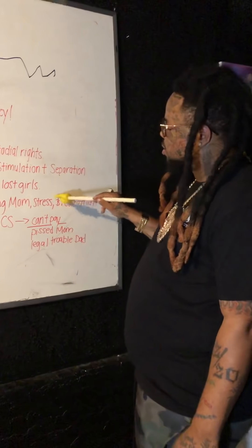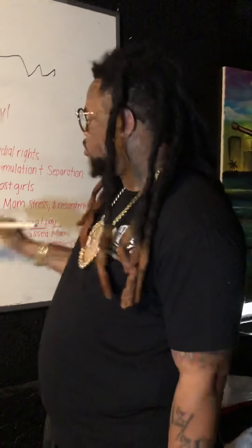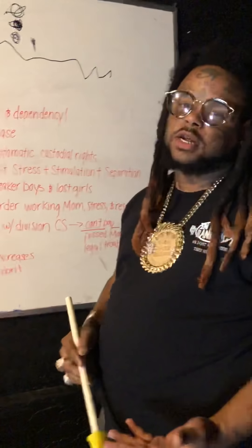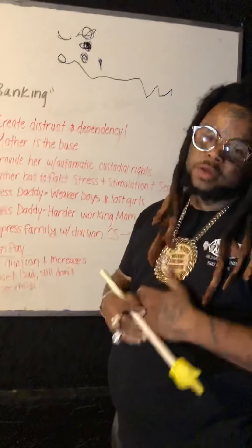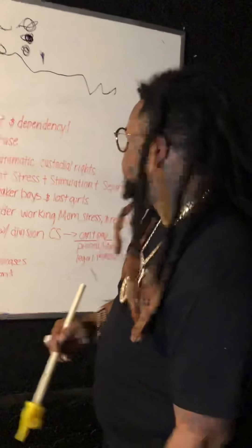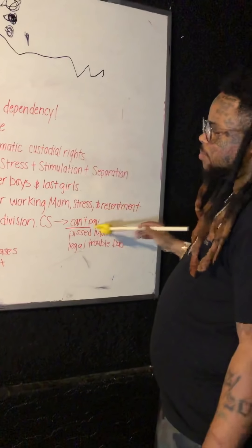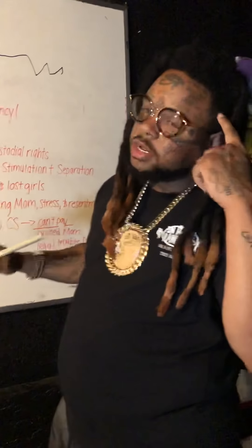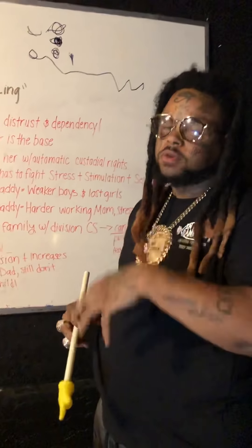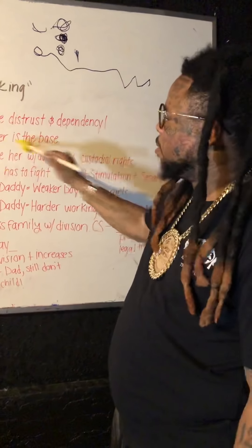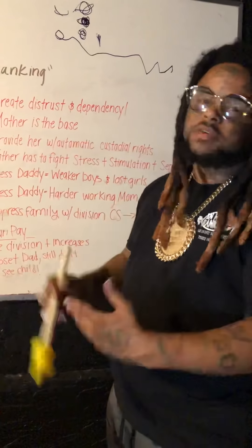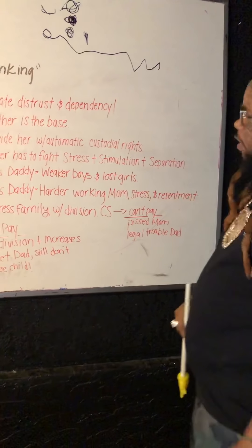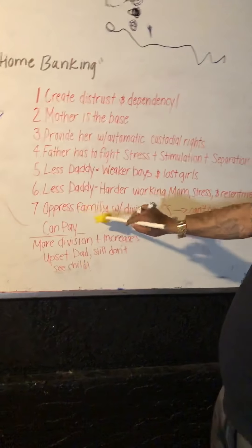Number six: less daddy equals harder-working mom, which equals stress, which equals less supervision — again going back to weaker boys and lost girls. Pops is not there to correct things because the system is not set up in his favor. The system is not set up in a family's favor period. Also resentment — when mom has to work harder and feels like she's carrying the load, she often doesn't think about the fact that the system created that. Remember, the mother is the base — if you destroy the mother, everything falls.